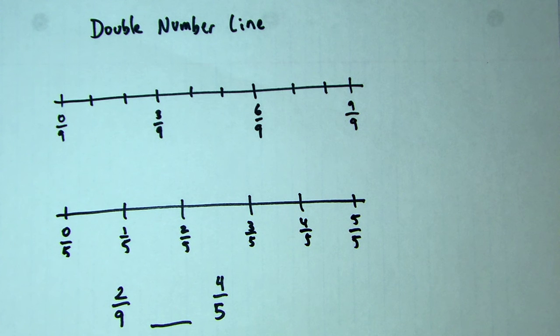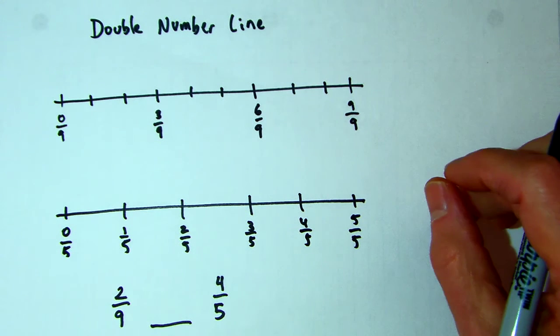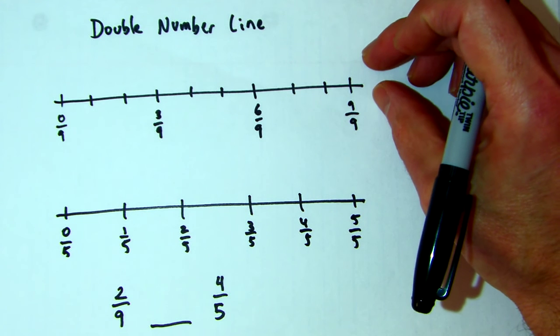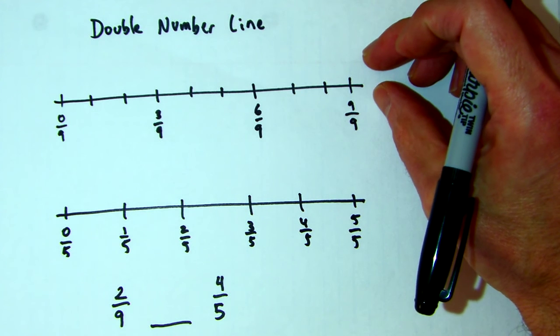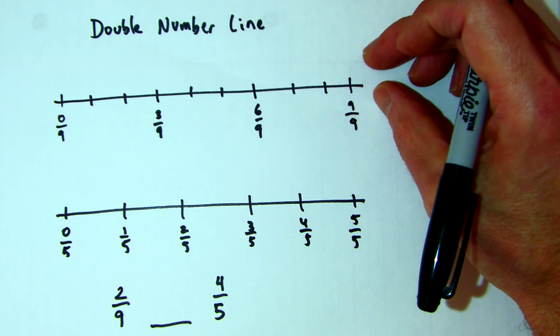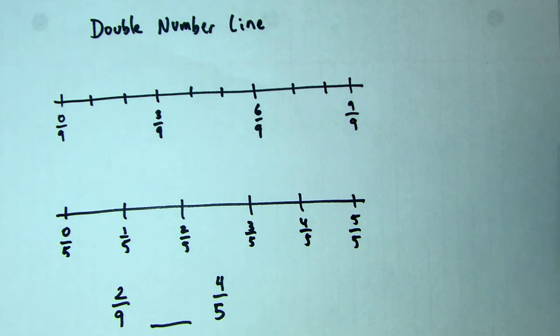The double number line isn't necessarily about having two. It's really the fact that I'm going to number this number line on both sides in different ways. You can do this with equivalent fractions, or with percents and dollar amounts. Let's say you're raising money for a goal of $300, and you're halfway there. On one side it would say 1/2, and on the other it would say $150. In this case, it's just equivalent fractions.